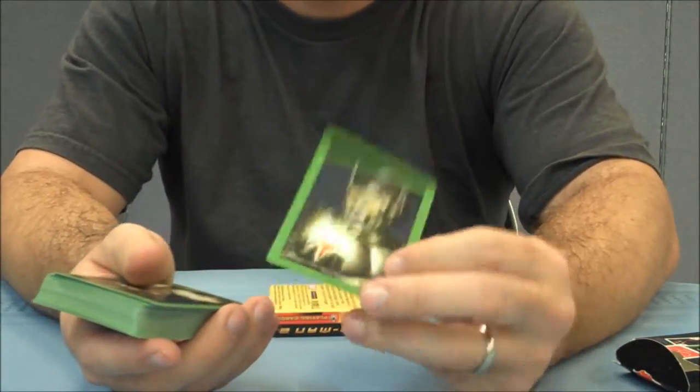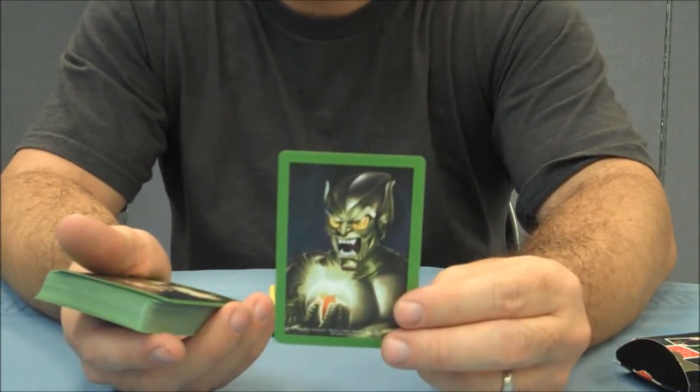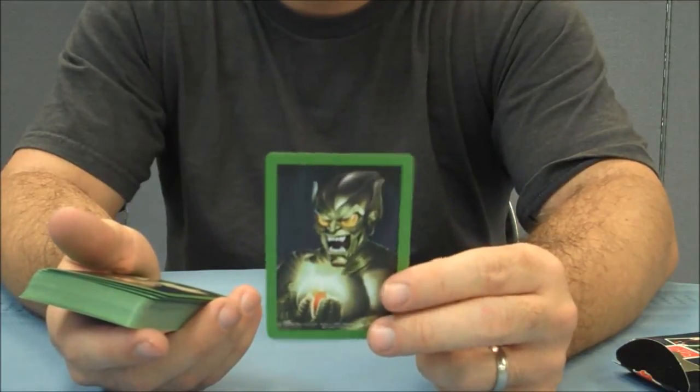The back design of the Spider-Man 1s is a one-way back design with a green border, I guess to go along with the Green Goblin. And it's just his picture.